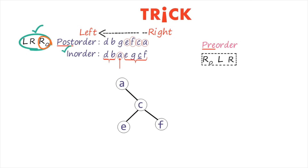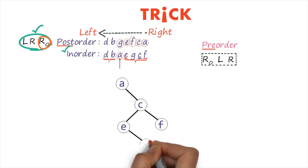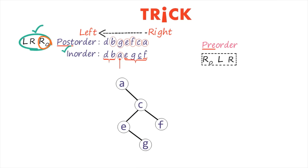Now what is the position of G? According to in-order, G is right side of root, left side of C, and also left side of F. But it is on the right side of E. So G goes to the right of E. This is how we gather clues about the relative position of nodes using in-order traversal. That's why we always need in-order traversal along with either post-order or pre-order. Without in-order, it is not possible to find the actual construction of the tree. B is at the left side of root, and D is also at the left side of root and left side of B.